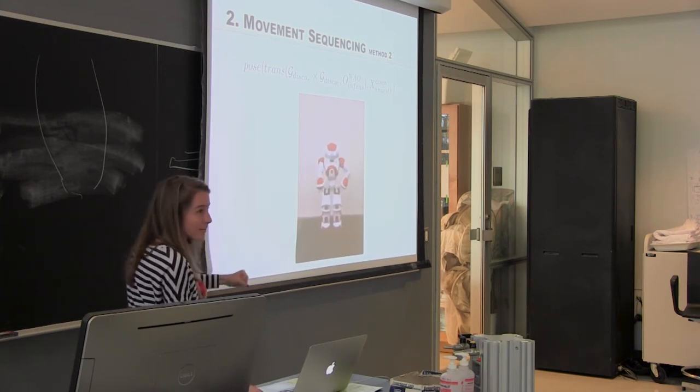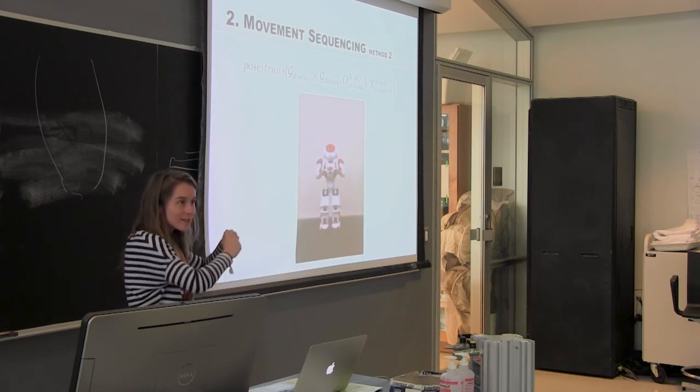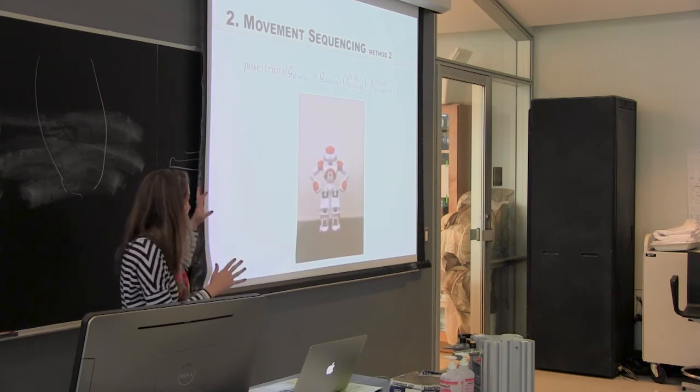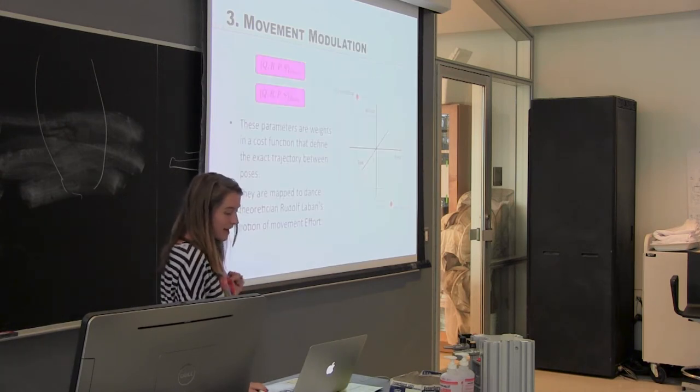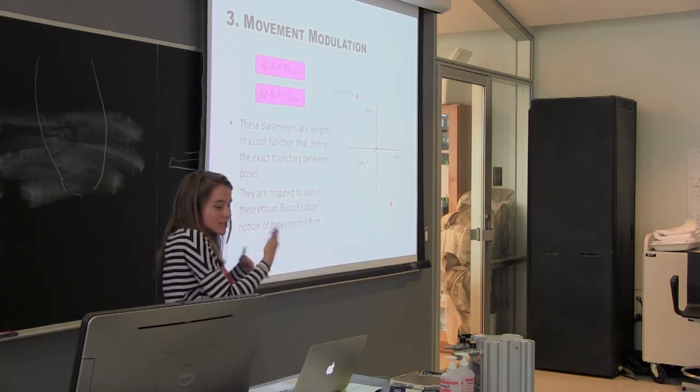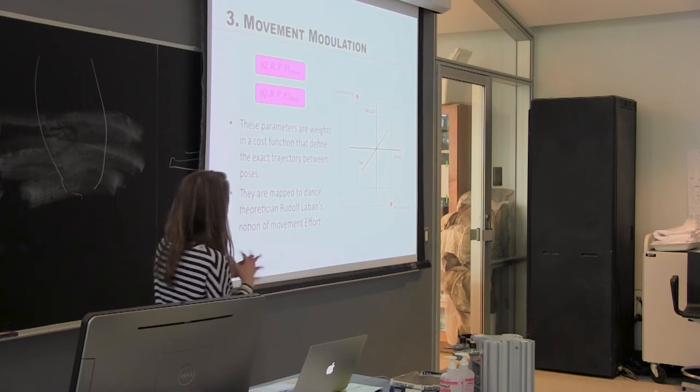But in both of these cases, the robot moves kind of very similarly, right? It's actually linearly interpolating between each pose and just taking kind of that basic pathway between them. And so now what I want to do is inject a little bit of variation from that point of view.